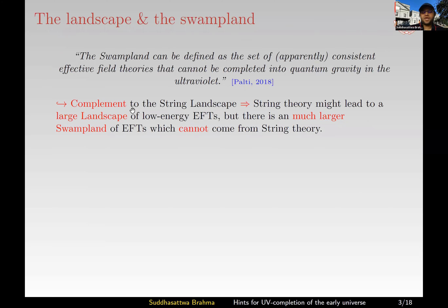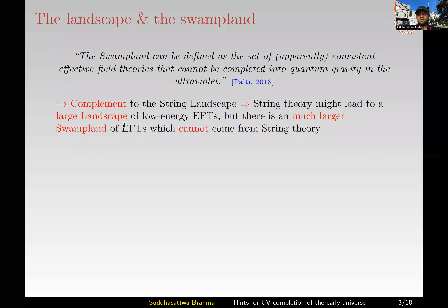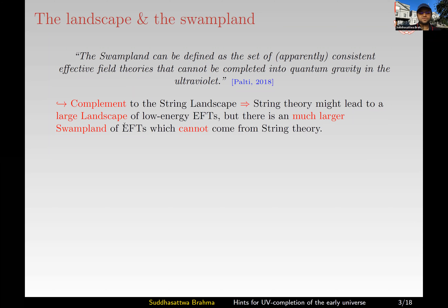As many of you perhaps know, this is a complement of the string landscape. The idea is that there can be a very large landscape of string theory, but the Swampland is even larger. In other words, there can be a lot of low energy effective field theories which can come from string theory, but there are a lot more which definitely do not. There are a lot of effective field theories which cannot have any UV completion.